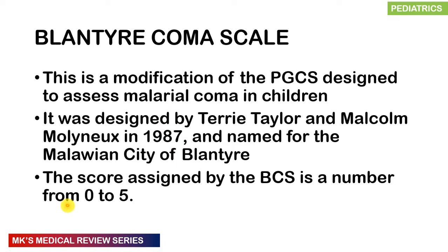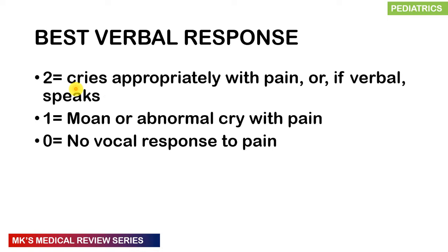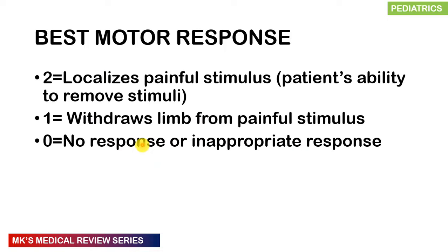Eye movements are scored out of 1: score 1 if they are able to watch or follow, score 0 if they fail to watch or follow. Verbal response is scored out of 2: score 2 if they cry appropriately with pain or verbalize that they are in pain, score 1 if they moan or produce an abnormal cry with pain, score 0 if there is no vocal response. Motor response is scored out of 2: score 2 if they localize pain and can remove the stimulus, score 1 if they withdraw their limb from a painful stimulus, score 0 if there is no response or an inappropriate response to any stimulus.